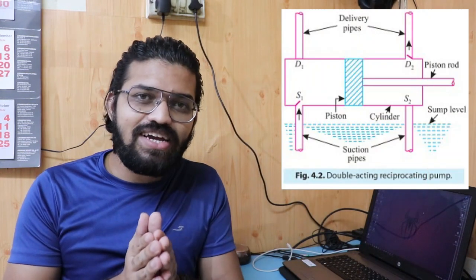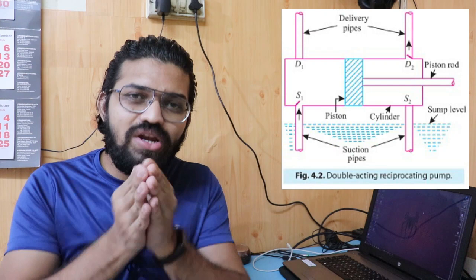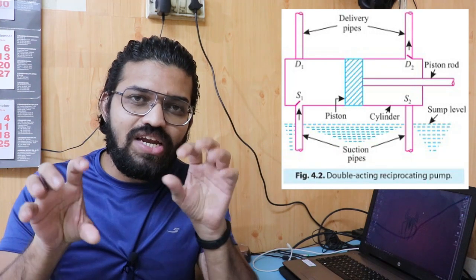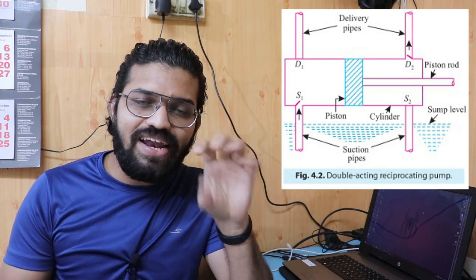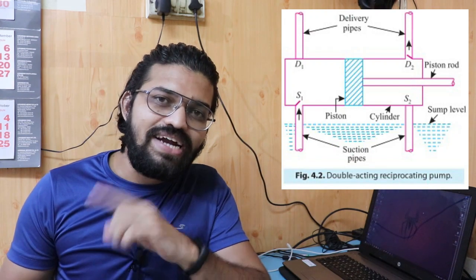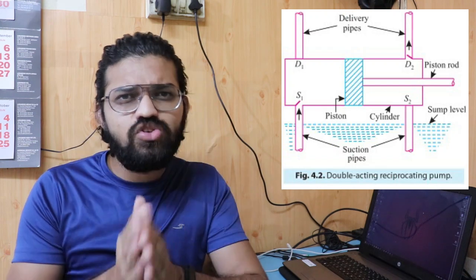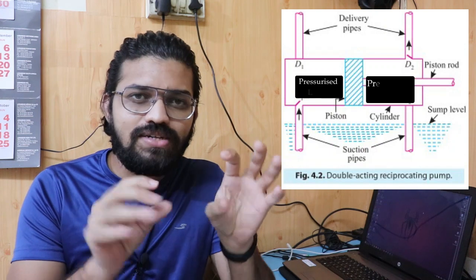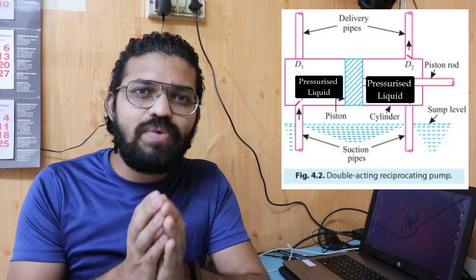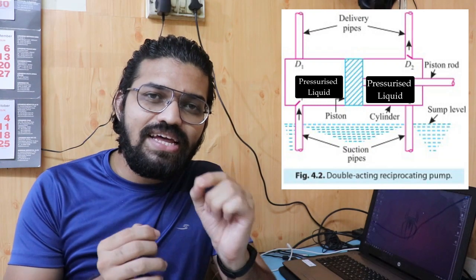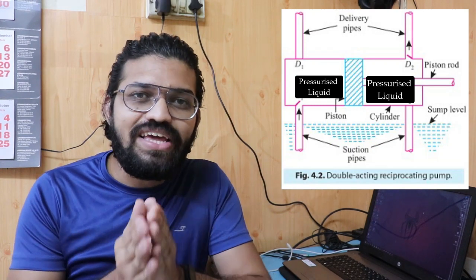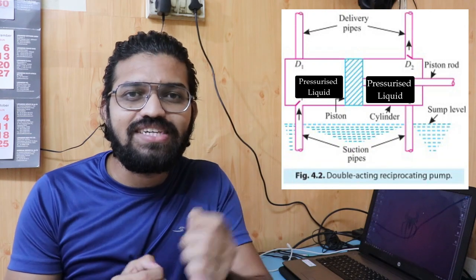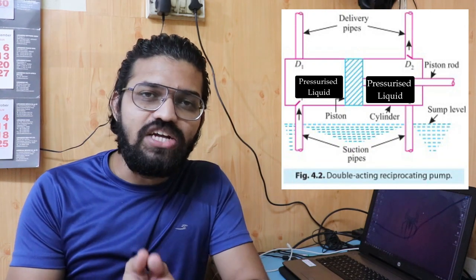Now let's discuss some problems with the double acting reciprocating pump. The piston is the only dividing medium between the liquid on both sides — liquid is present on the left side and also on the right side simultaneously. At a certain point, when liquid is present on both sides of the piston, there is a chance of leakage, which is termed as slip.